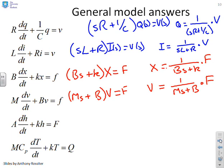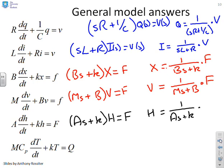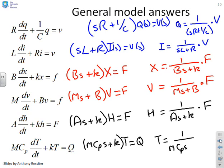Next one was the tank level. A(dH/dt) + K into H(s) = F(s) and therefore you get H(s) = 1/(As + K) into F. And the final one, which is the heating system, you'll see you get (MCPs + K) into T = Q or the temperature T = 1/(MCPs + K) into Q.